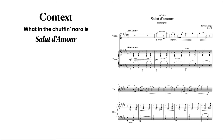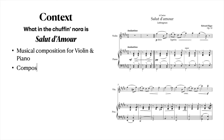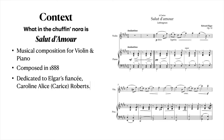Salut d'amour is a composition for solo violin and piano and it was composed in 1888. A piece of the late 19th century, composed in his early 30s, opus number 12, it is an earlier published composition of Sir Edward Elgar's. Dedicated to his fiancée Caroline Alice Roberts, the dedicatee name on the score, Carice, is her first and middle name Caroline Alice combined. Incidentally, Carice also became the name of their first daughter.